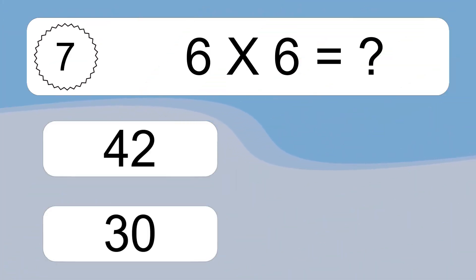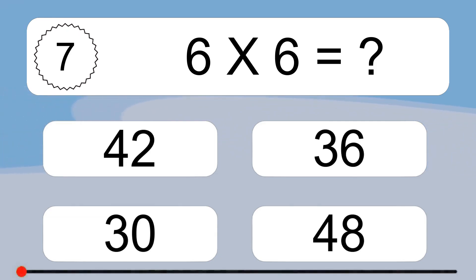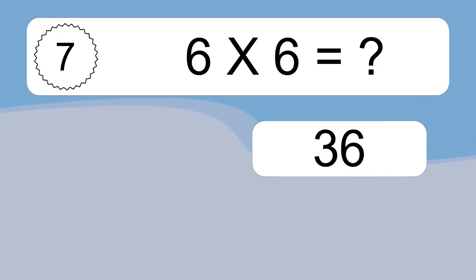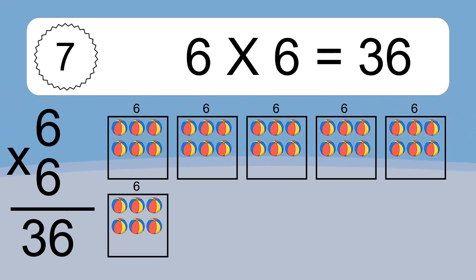6 times 6 equals what? 6 times 6 equals 36. We have 6 boxes, and each box has 6 colorful balls inside. If you count all the balls in all the boxes together, you will have 6 times 6 balls. This equals 36 balls.